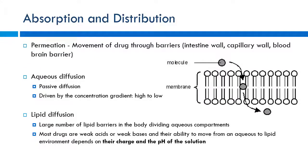First: absorption — how do we get the drug into the body? We talked about permeation and aqueous diffusion. These are passive processes, going from areas of high concentration to areas of low concentration. Most drug absorption occurs via this kind of passive diffusion — we're giving a large bolus dose, creating a high concentration at the administration site, and the drug then partitions out across the tissues.